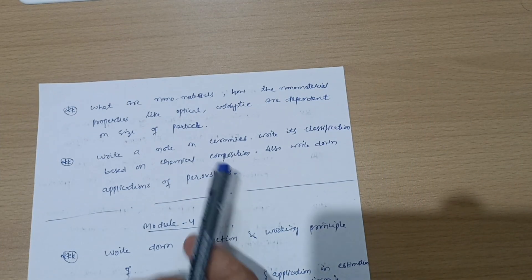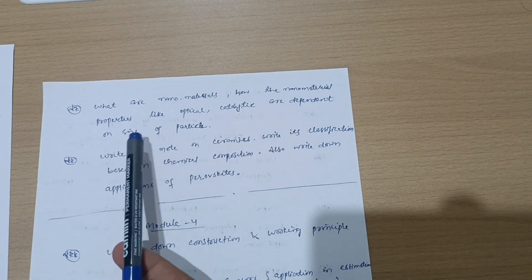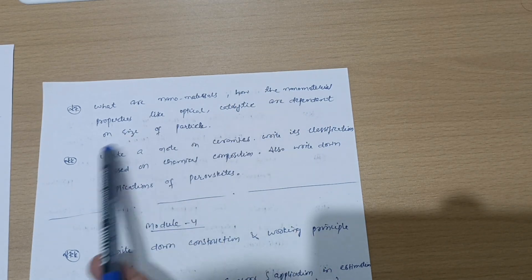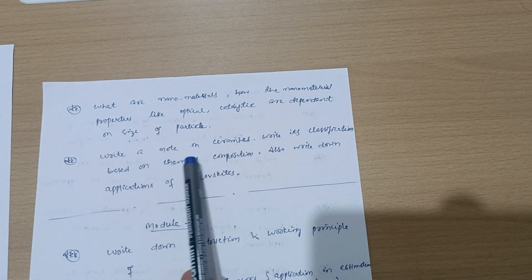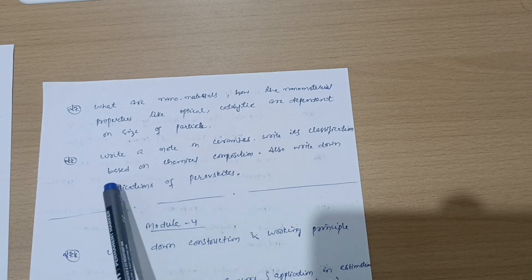Write down the properties and engineering applications of carbon nanotubes and graphene. So next, this is all about Module 5. Now let me take some other questions from Module 5: what are the nanomaterials, how the nanomaterial properties like optical and catalytic are dependent on size of particle.